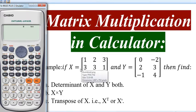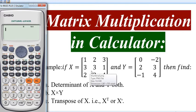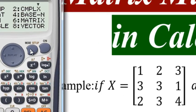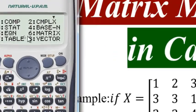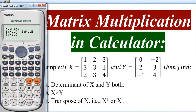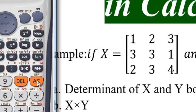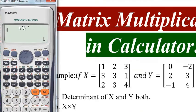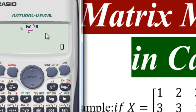First of all, we have to enter these two matrices on this calculator. The very first step is to store the given matrices on this calculator. For that, we have to change the mode of the calculator. Let's press the mode button — in number 6 there is the option for matrix. Press number 6 and then press the AC key. Now we can see on the display that MAT is shown, which means the calculator has been changed into matrix mode.